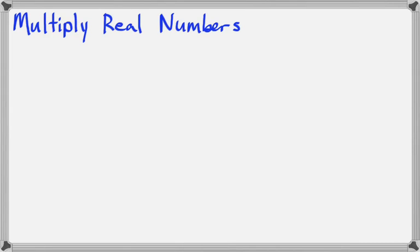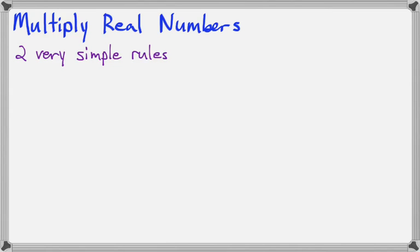In this lesson we're going to talk about how to multiply real numbers together. By real numbers I mean any negative or positive numbers you would run across — decimals, fractions, whole numbers — anything at all will follow these rules. And they're two simple rules, a lot easier than when we learn how to add and subtract signed numbers, because we don't have to think about the sign of the larger number and all that.